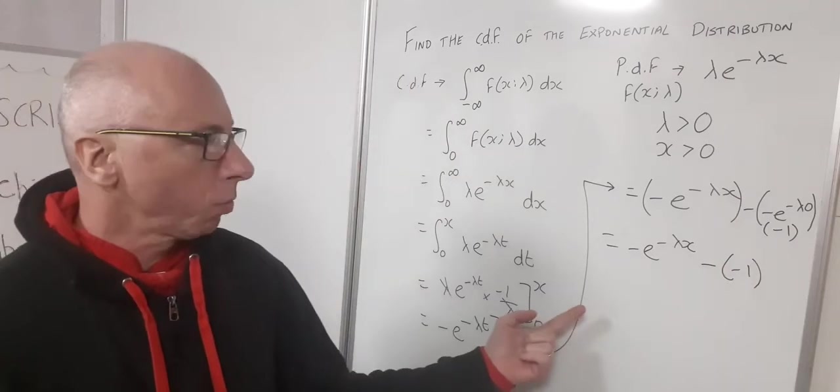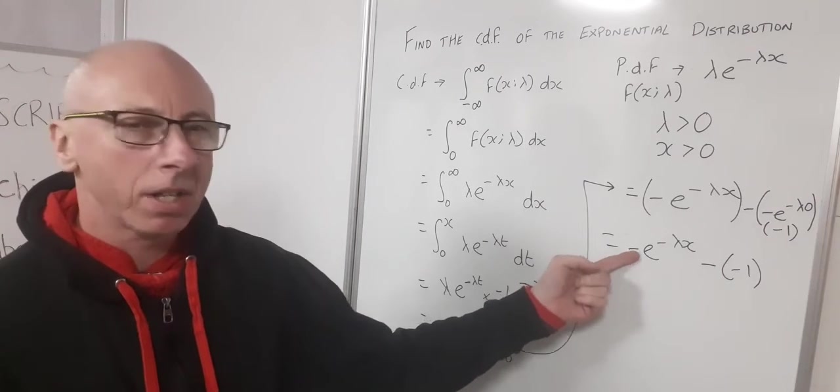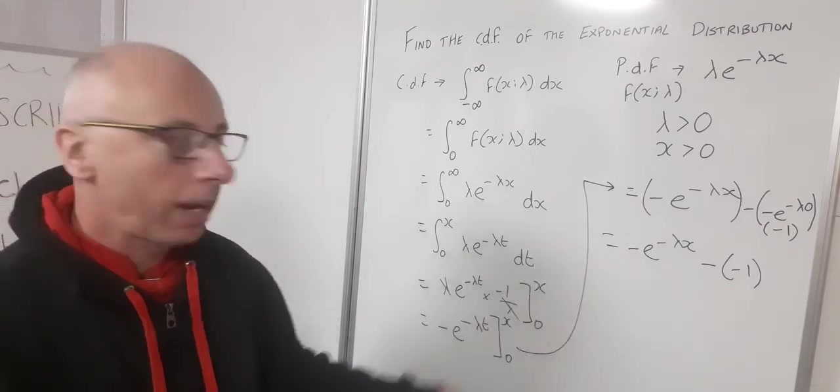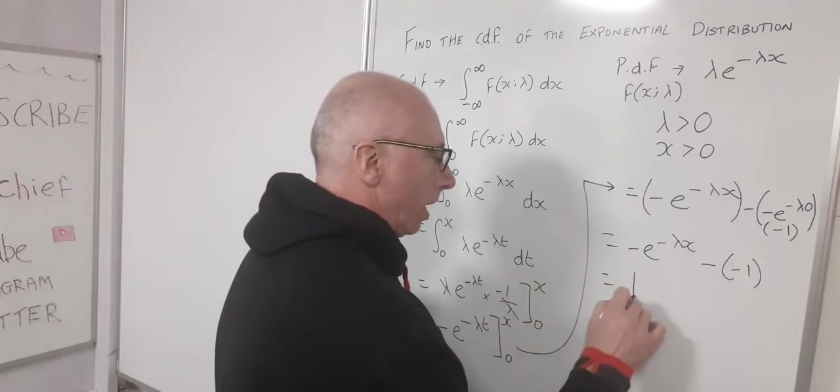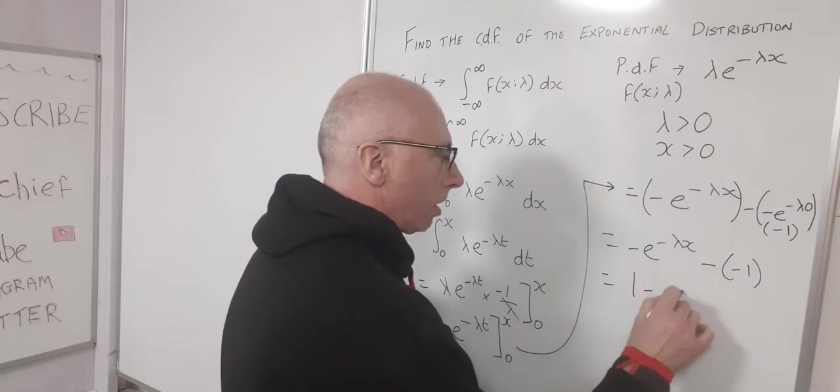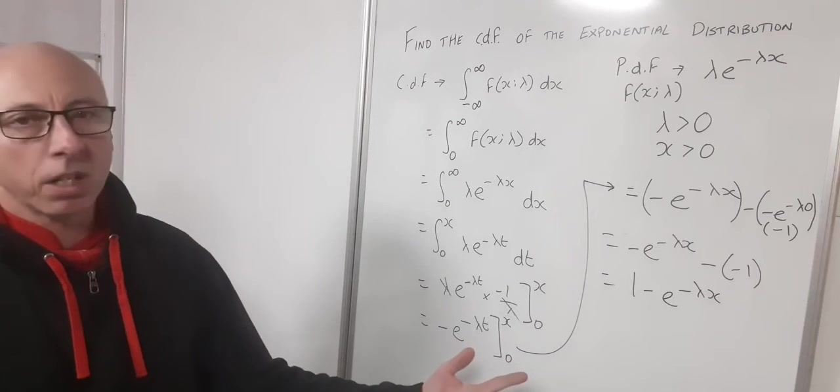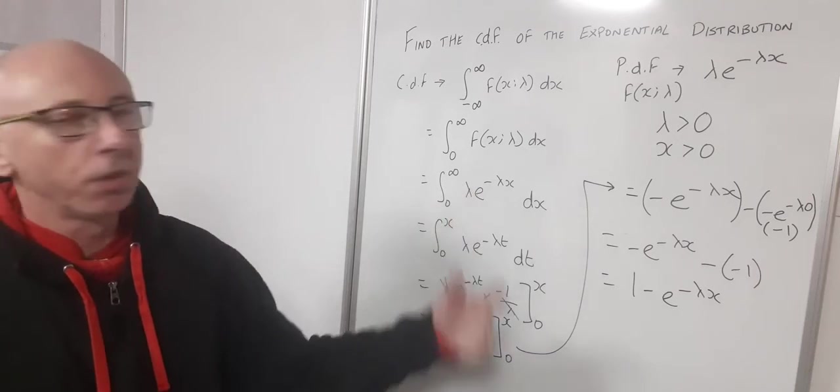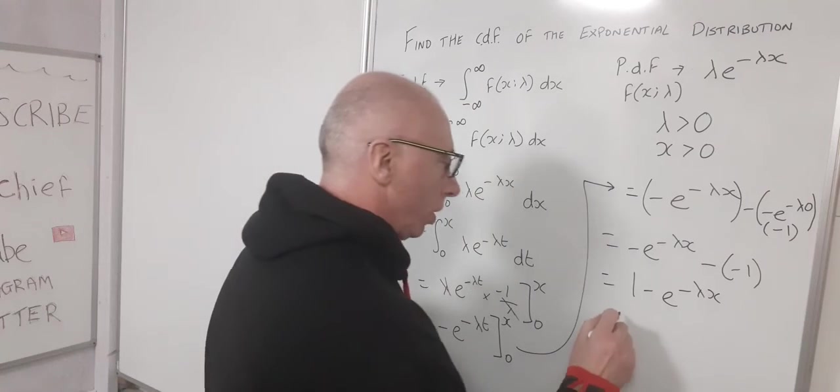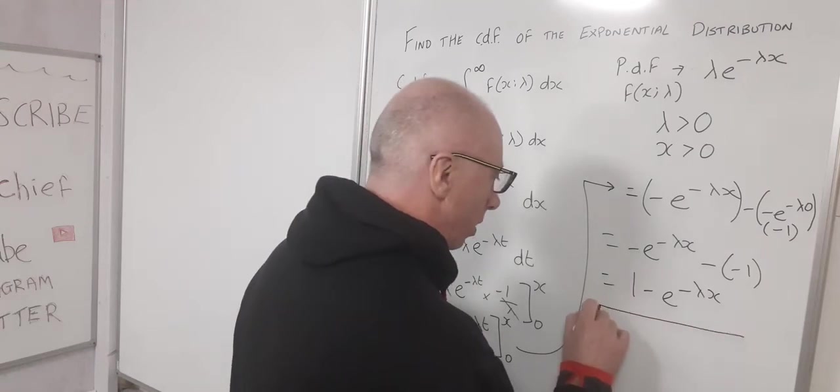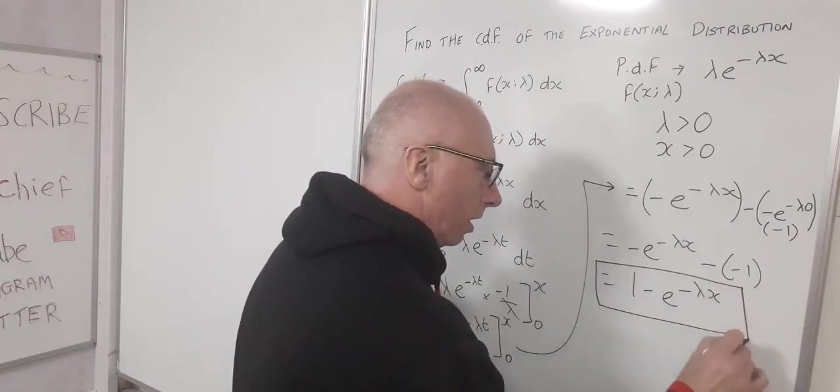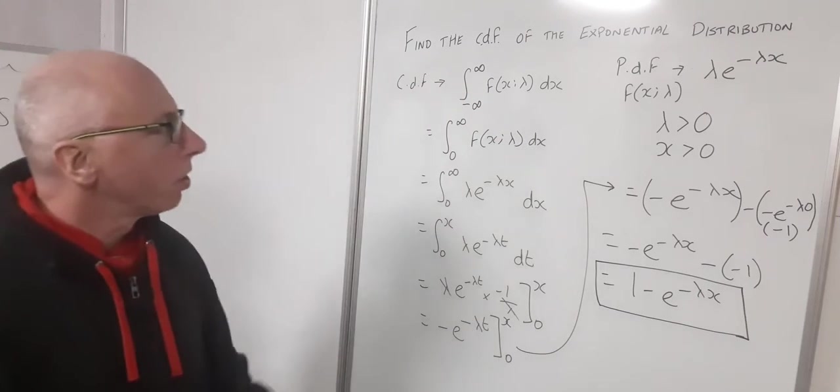Okay, well this minus minus one is just plus one. And as we've got a minus sign here, I can bring my one out to the front. So that equals one minus e to the minus lambda x. And that is my cumulative distribution function for the exponential distribution. So that is my result using my integration.